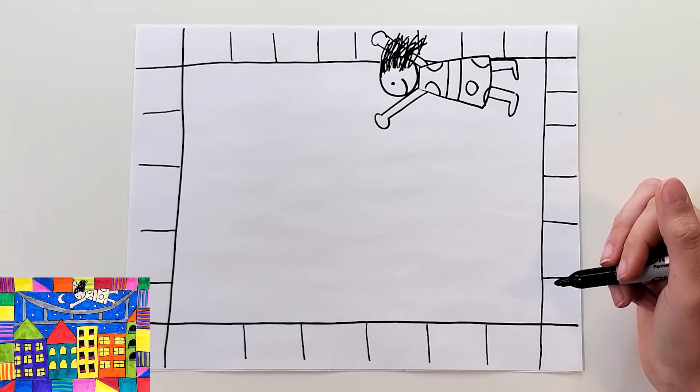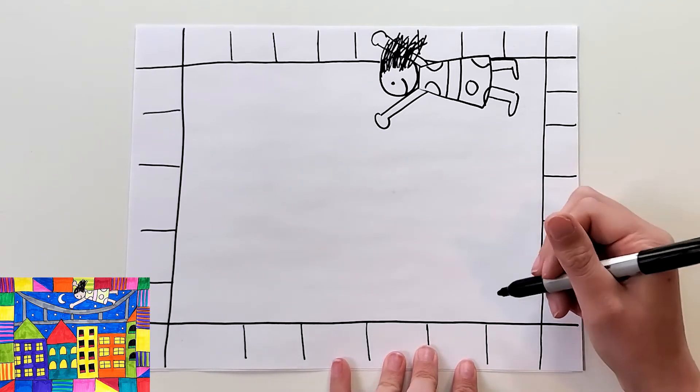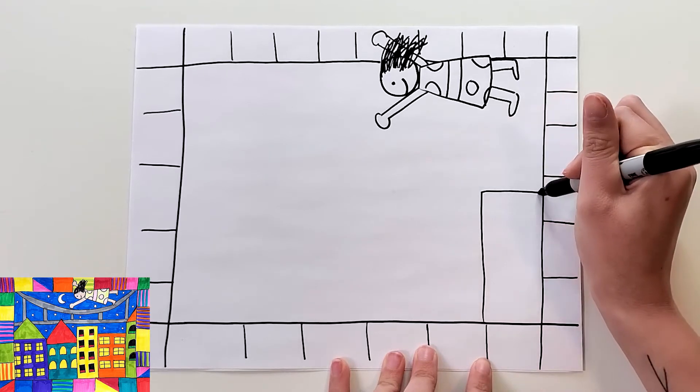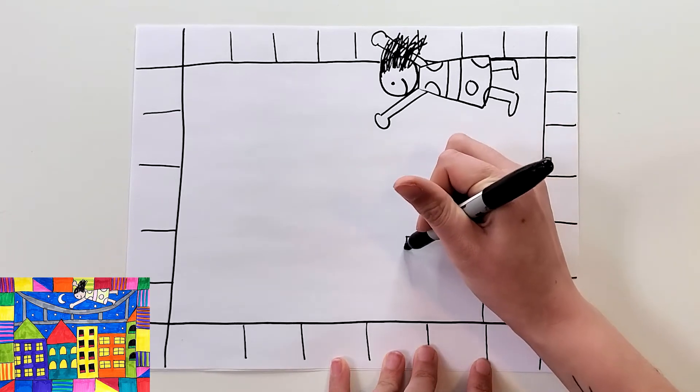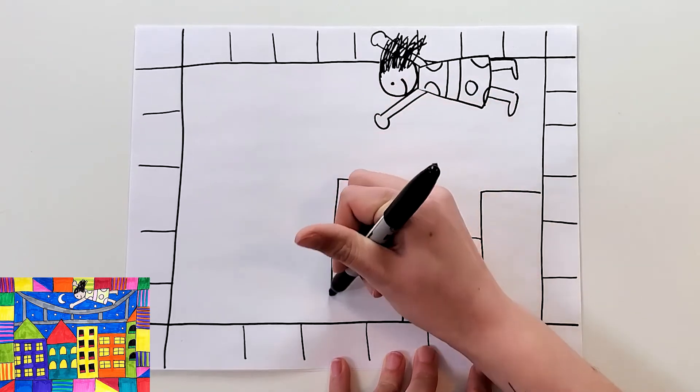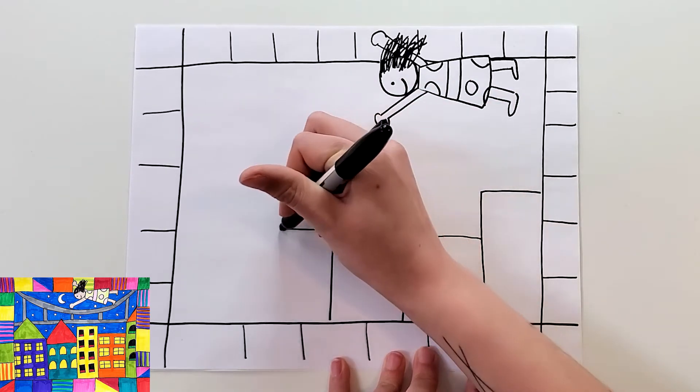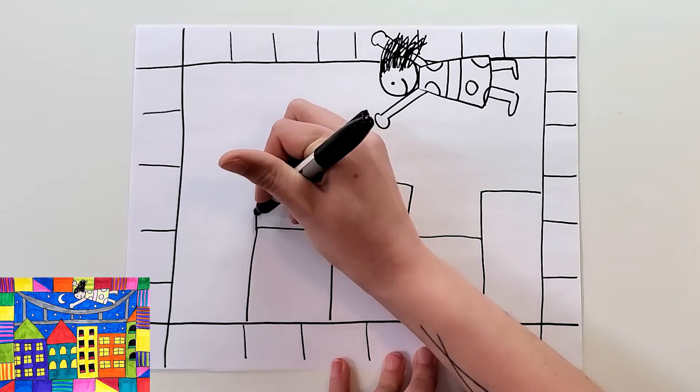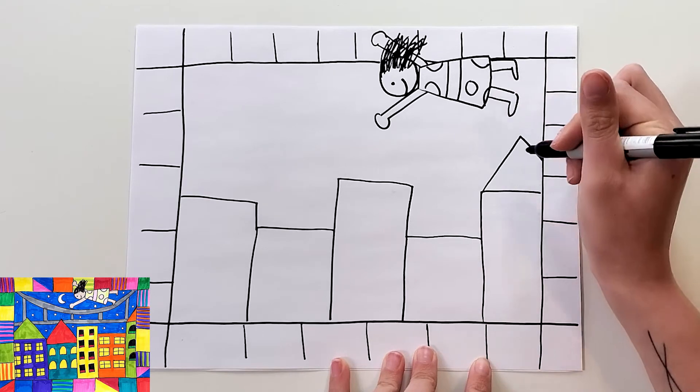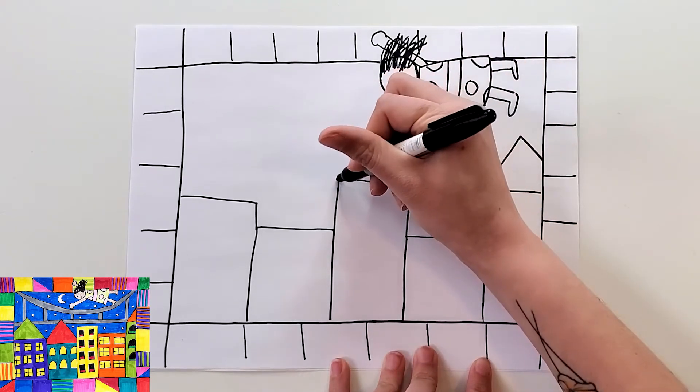Next, we're going to draw the city. We're going to draw a couple of different sized rectangles. I'm going to draw one that's tall here, and you're just going to make a couple that are different heights going all across your paper. You can add triangles on the tops of some if you want to have a different shape for the roof.